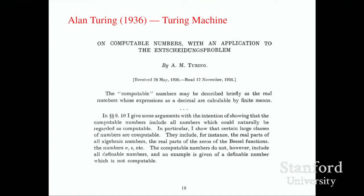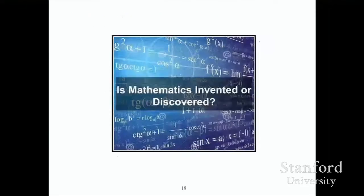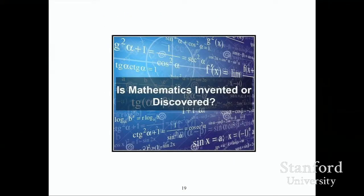He made this argument, and that finally convinced Gödel — all three were proved equivalent, and Gödel finally said, "okay, maybe I have the right definition after all." Now, philosophers argue about whether ideas in mathematics are invented or discovered, but one of the themes of this talk is going to be: when you have several things independently coming together, that's powerful evidence that you have discovered something.